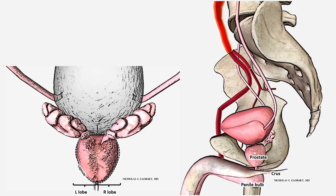Below the prostate is something called the penile bulb and the crus — these are organs of sexual function. Just on top of the prostate is the bladder. The bladder is like a water balloon with walls that are muscle, so it's always trying to contract and push urine out through the urethra and through the prostate and out of the body. Right behind the bladder and just on top of the prostate are the seminal vesicles, or SVs.